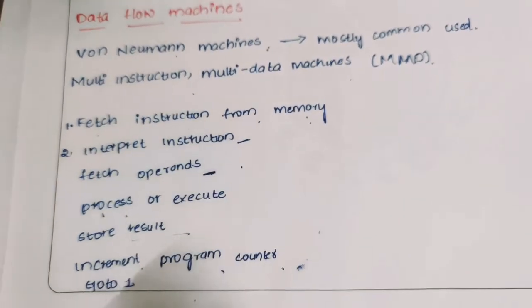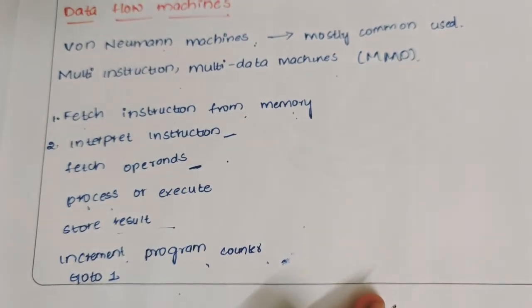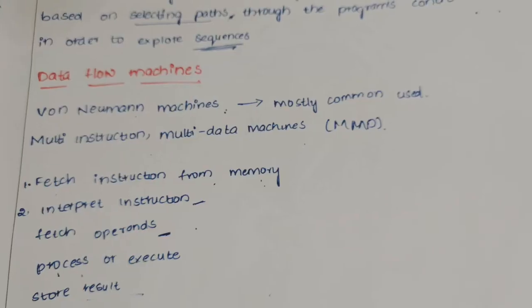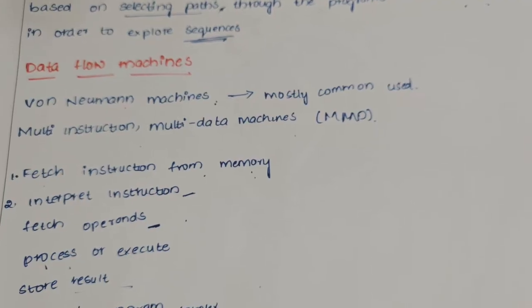Then increment the program counter and go to the first step. This is Von Neumann machine architecture.